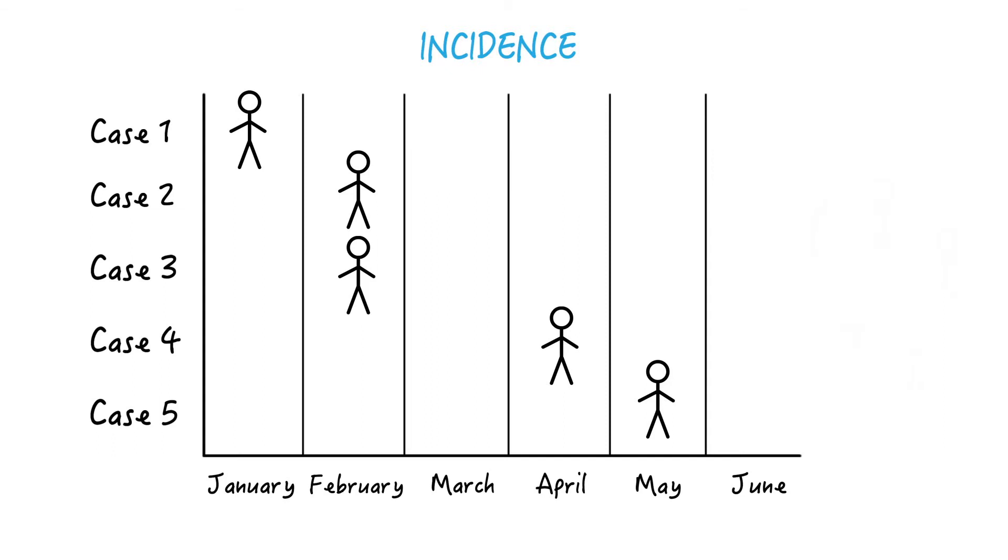So ignoring the denominator for now, the incident cases in February, for example, would be two. Or in other words, two would be the numerator of the incidence rate for that month. And it would be one for the months of January, April and May.